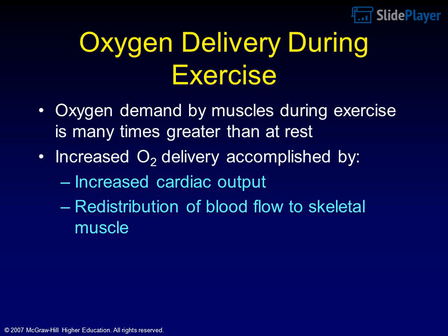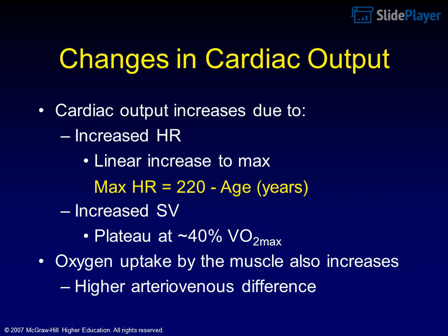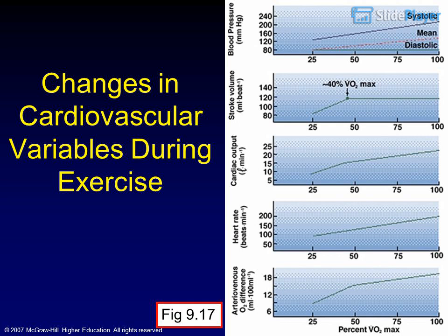Oxygen delivery during exercise: oxygen demand by muscles during exercise is many times greater than at rest. Increased O2 delivery is accomplished by increased cardiac output and redistribution of blood flow to skeletal muscle. Changes in cardiac output: cardiac output increases due to increased HR (linear increase to maximum) and increased stroke volume (plateau at approximately 40% VO2 max). Oxygen uptake by the muscle also increases due to higher arteriovenous difference. Maximum HR equals 220 minus age in years.